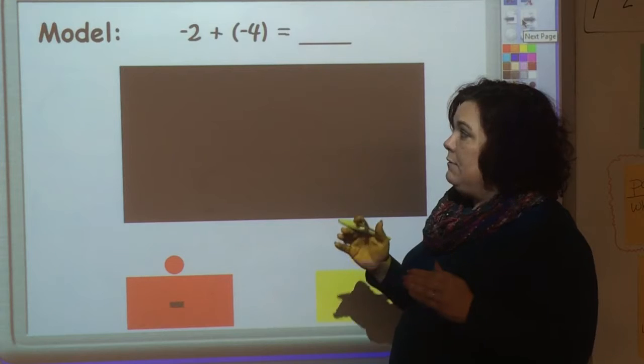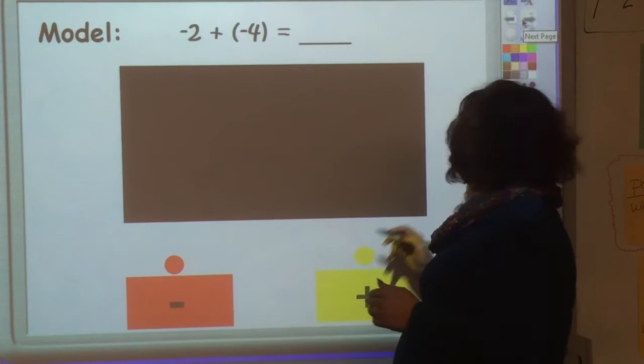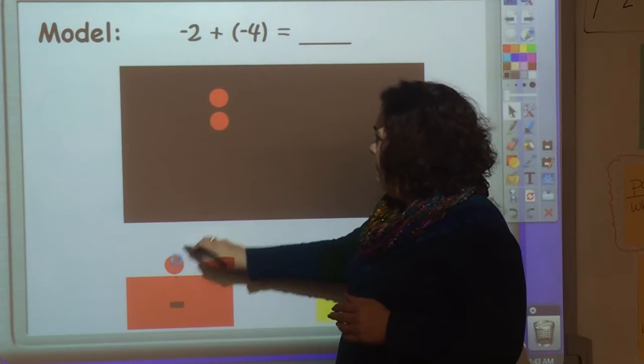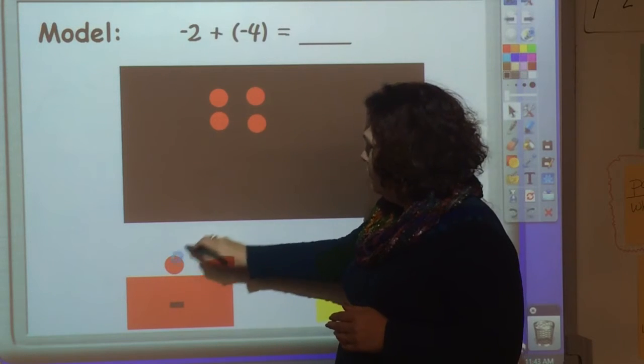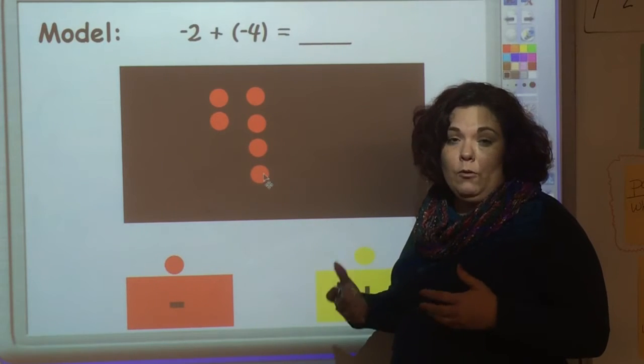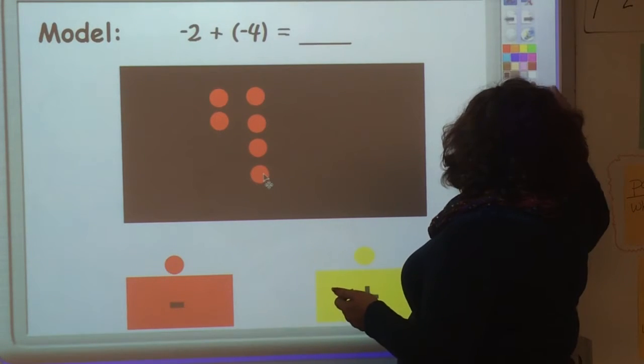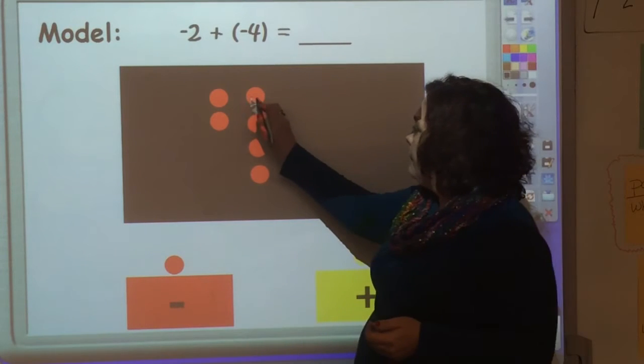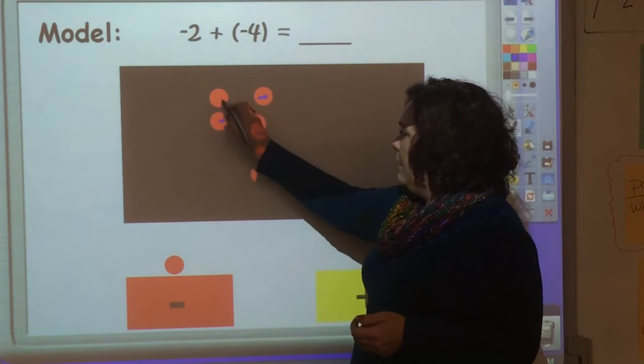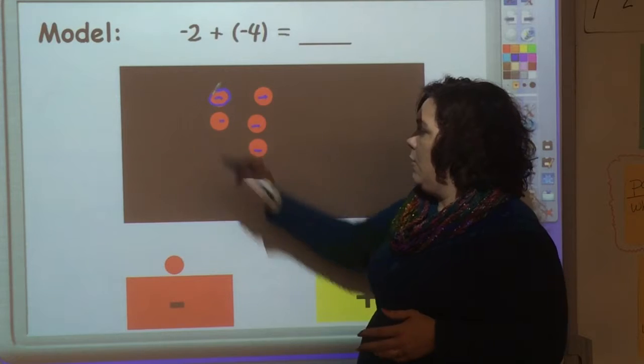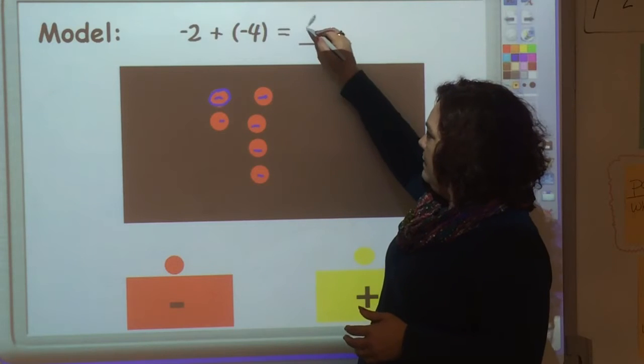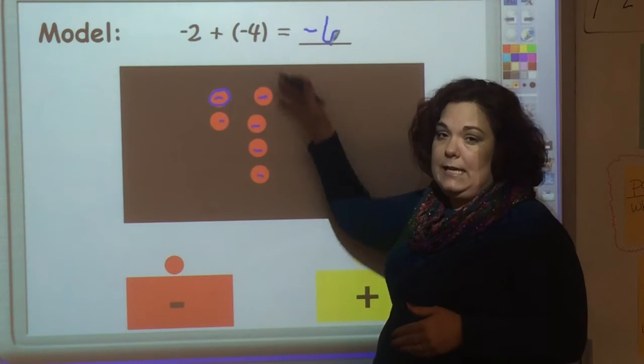So now negative two plus negative four. I'm going to show two negatives in the red and then four more negatives. Now if you're doing this on your paper, you may not be able to use red and yellow, but you can use the signs negative, negative, negative, negative, negative, negative, and a circle to show that is a negative. So negative two and negative four combines together and gives me negative six.